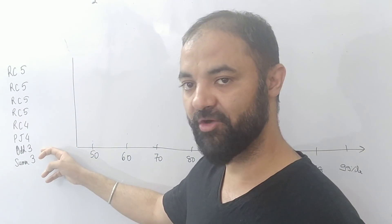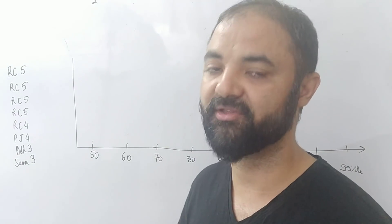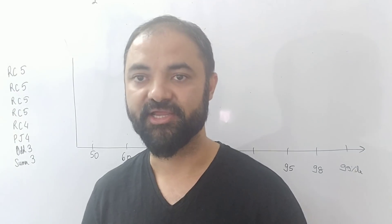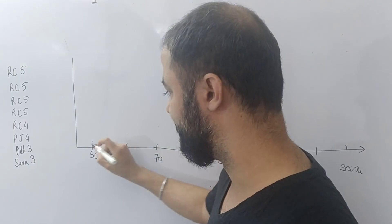Then Para Jumbles 4 questions, odd man out 3 questions, and summary of the passage 3 questions. That's your breakup of the 34 questions which we have. So out of these 34 questions, if you are able to make 2 questions right, only 2 questions right, you will get 50 percentile.